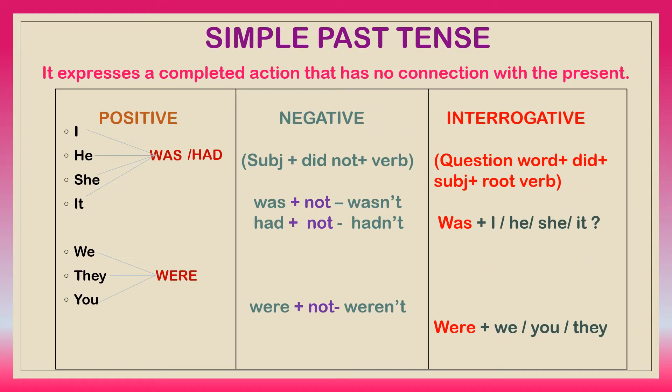Simple past tense expresses a completed action that has no connection with the present. According to the pronouns, whether singular or plural, the helping verb used is 'was' for singular pronouns and 'were' for plural pronouns. For negative sentences, we use the word 'not,' and in interrogative sentences, the helping verb 'was' or 'were' comes before the pronoun.